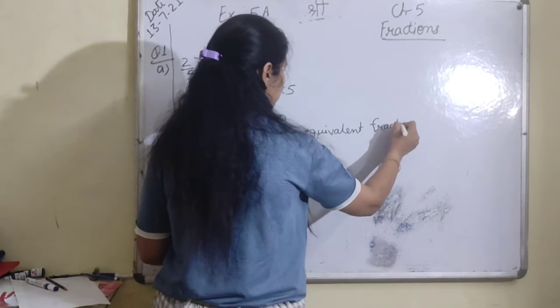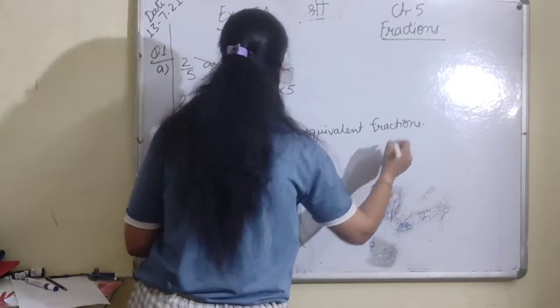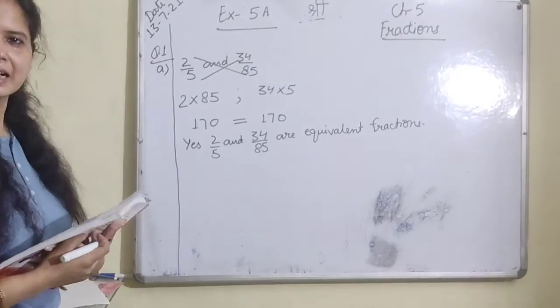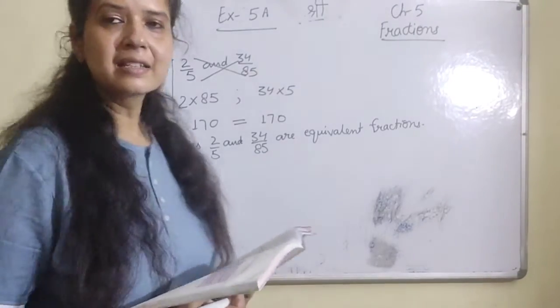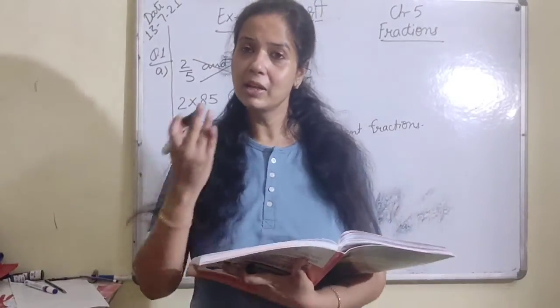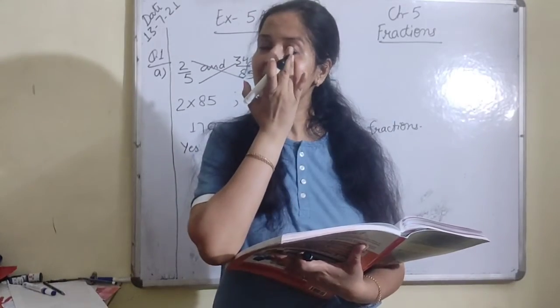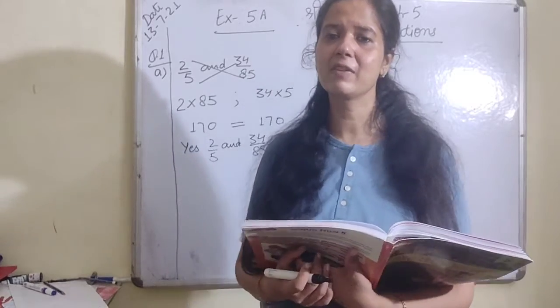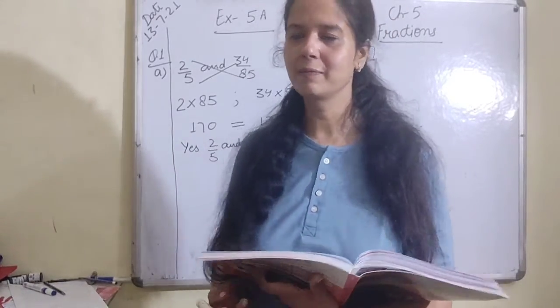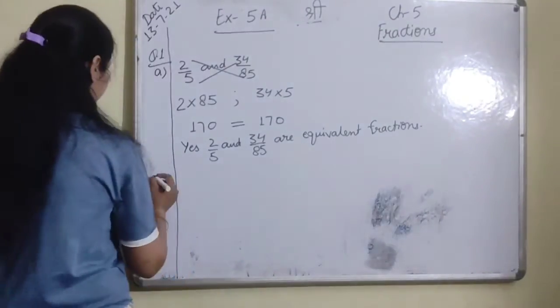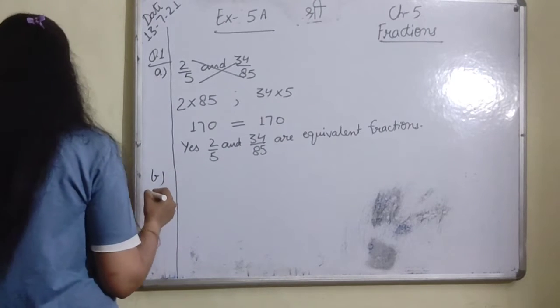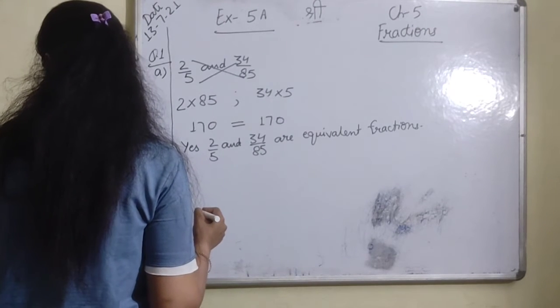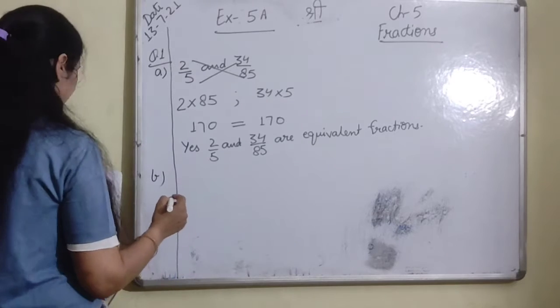Next part. Equivalent means equal. And 56 upon 99.